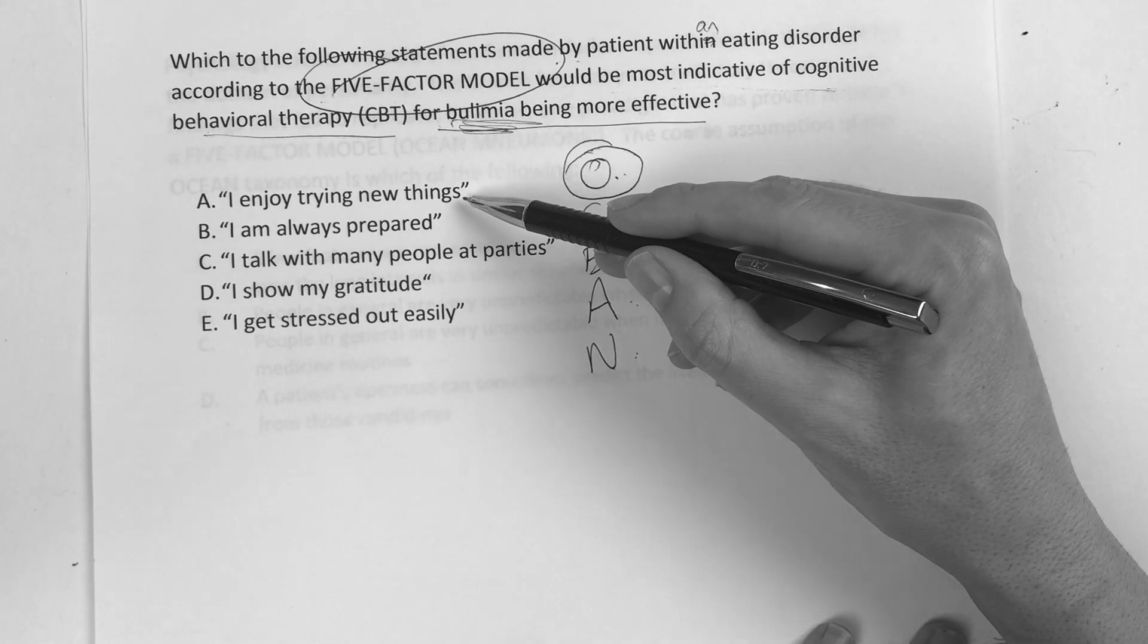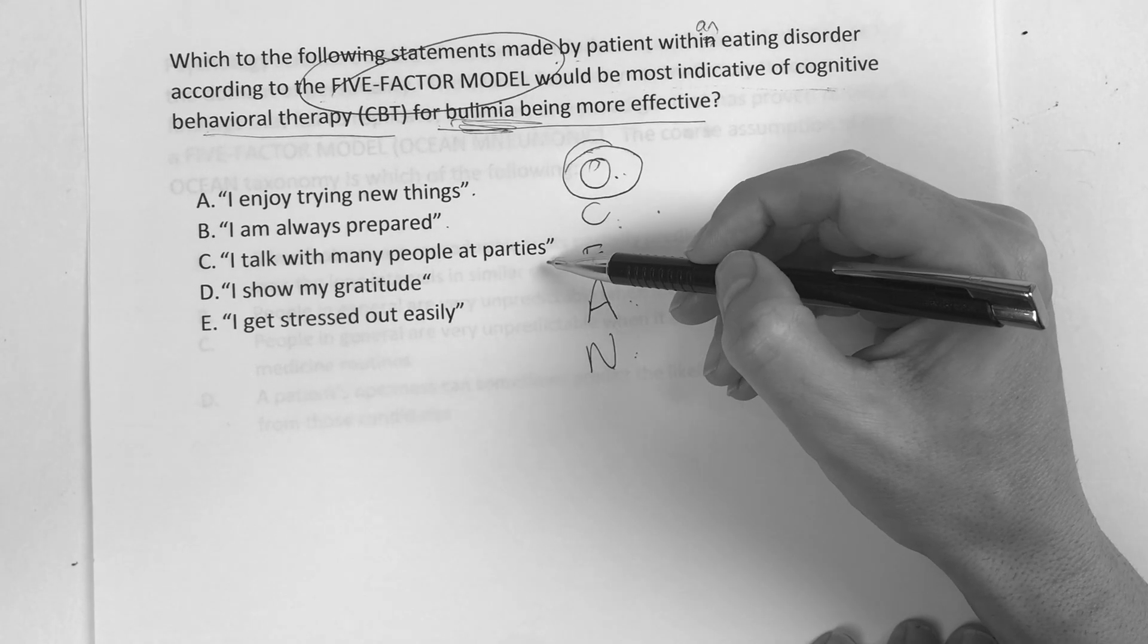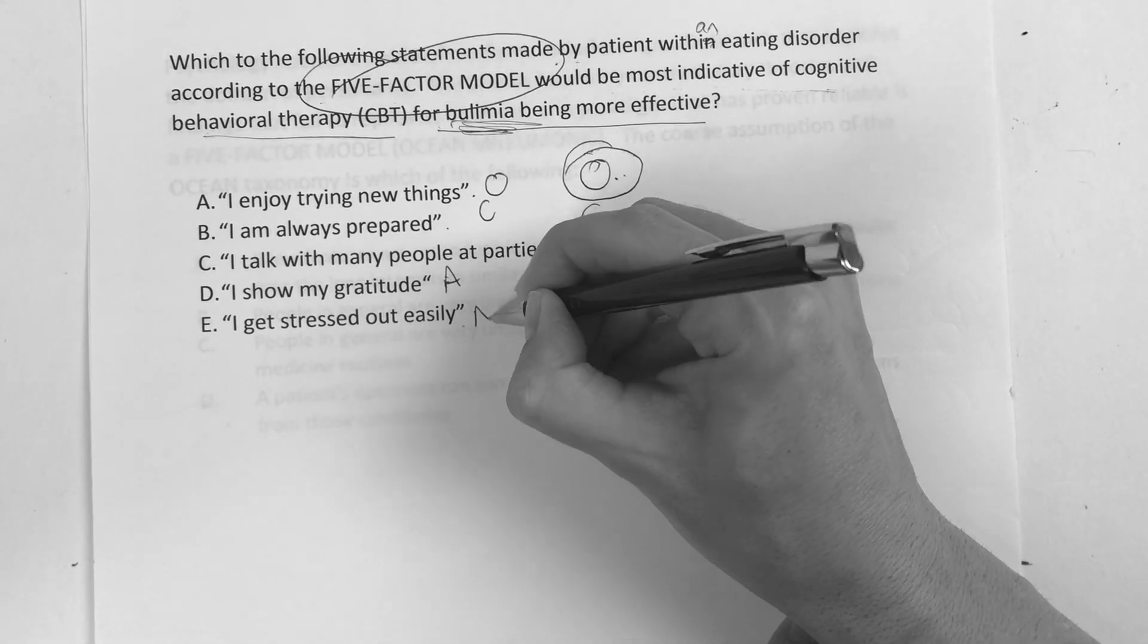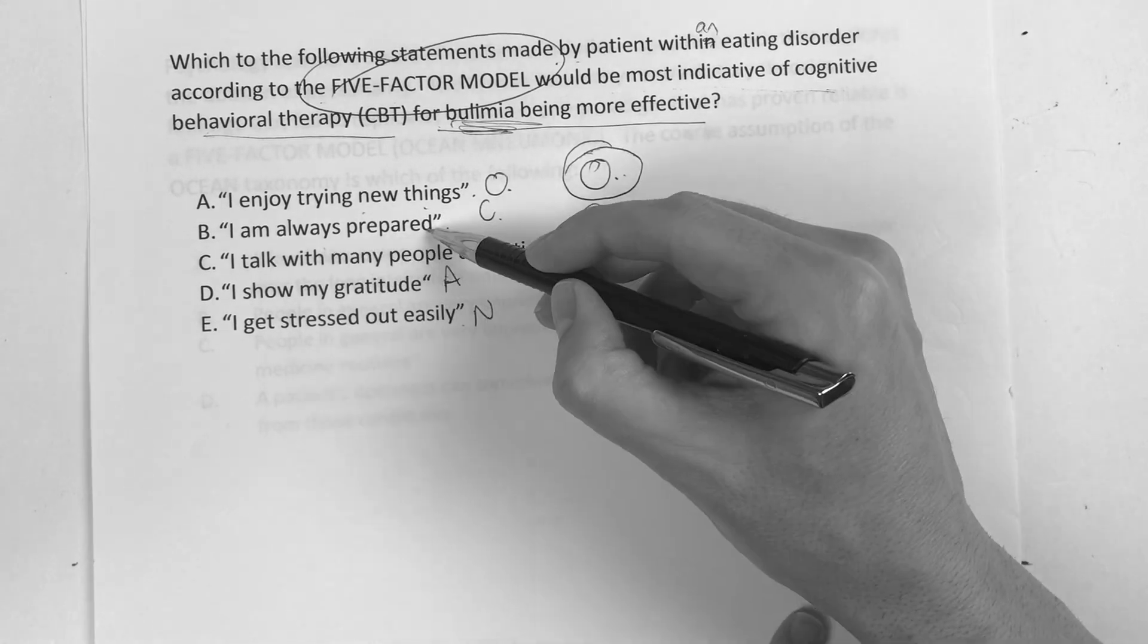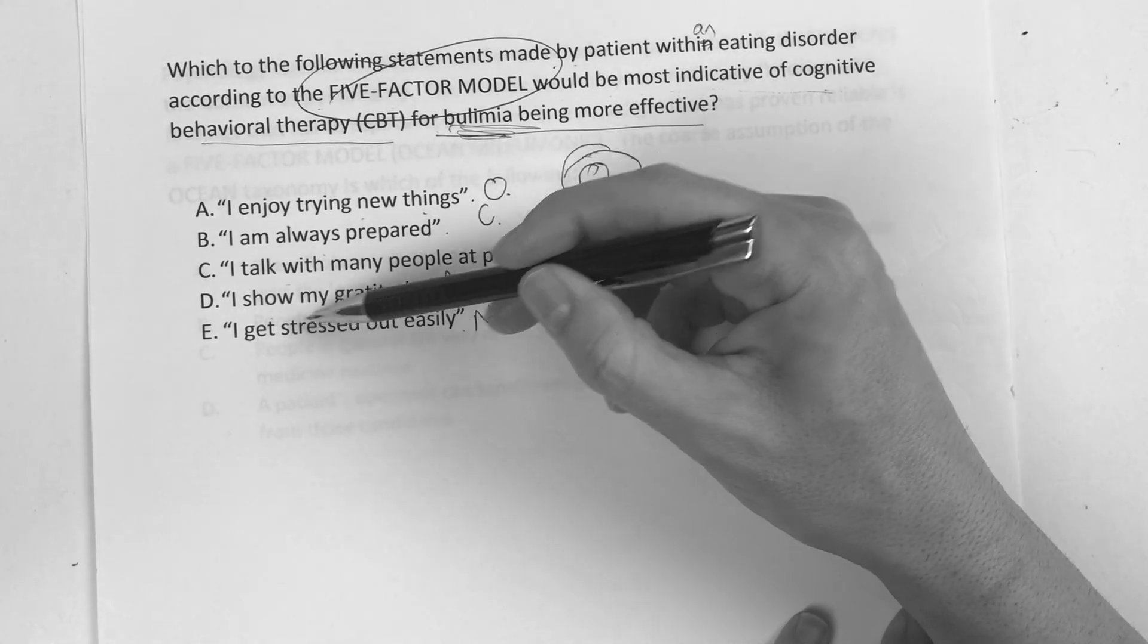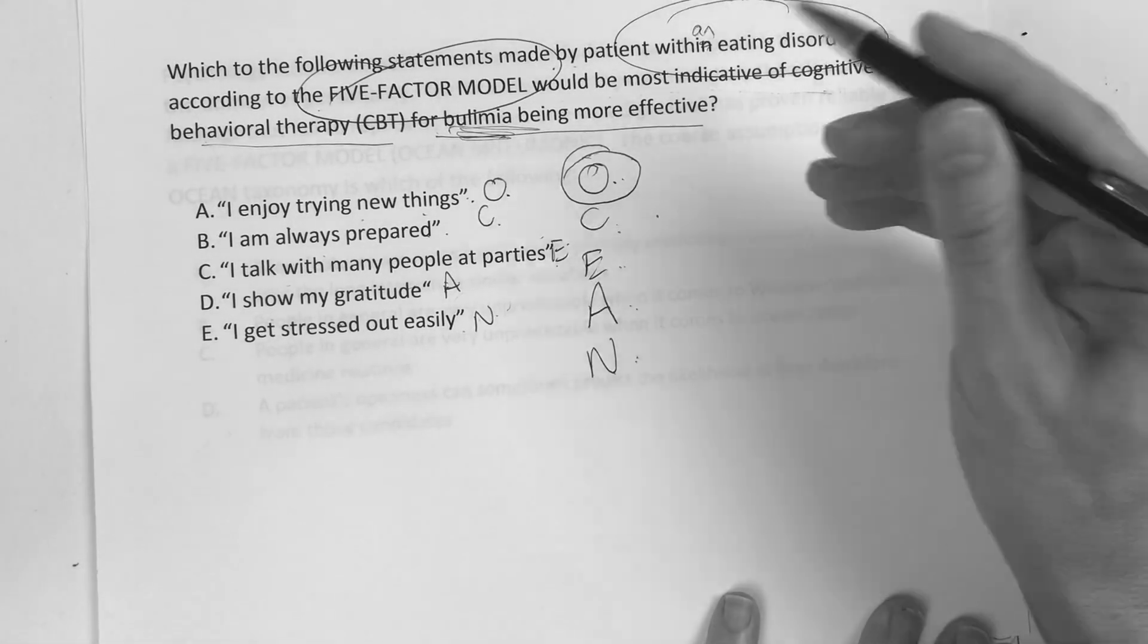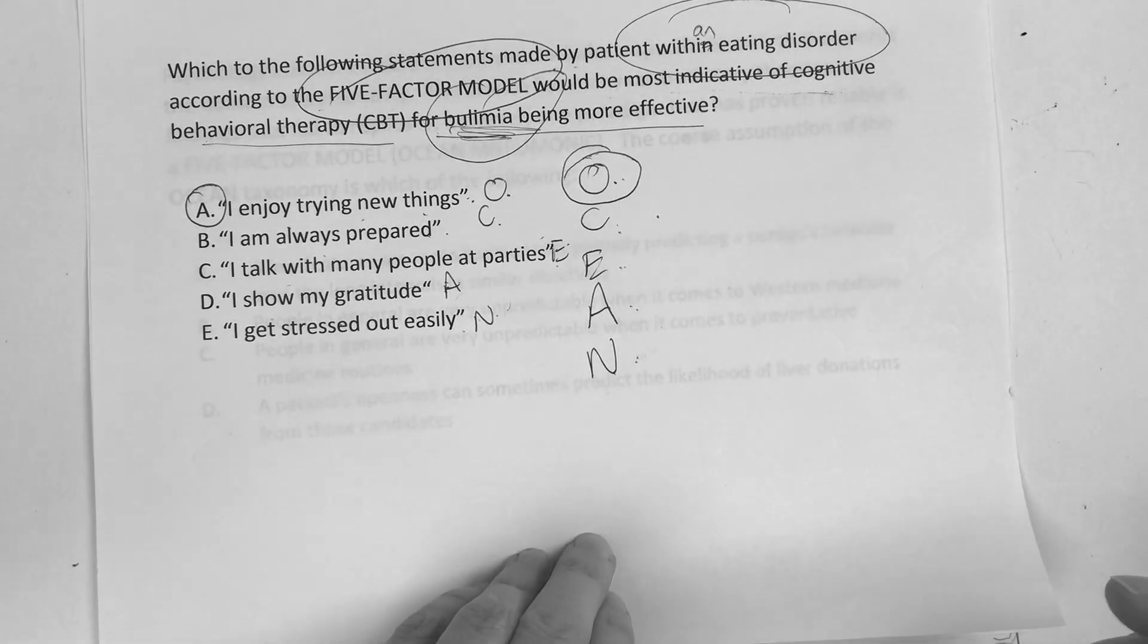Now which of these would be a statement for openness? I enjoy trying new things. I'm always prepared. I talk with many people at parties. I show my gratitude. I get stressed out easily. Well obviously I made it simple. Each one of these goes with the corresponding OCEAN going down. So openness is going to be I enjoy trying new things. Conscientiousness is I'm always prepared. Extroversion, I talk with many people at parties. Agreeableness, I show my gratitude. Neuroticism, I get stressed out easily. And you know that the step exams are very popular on these kind of statements and quotes. But when it comes to eating disorder, say bulimia and such, I want you to jump all over openness, which you would choose I enjoy trying new things.